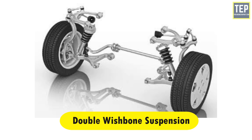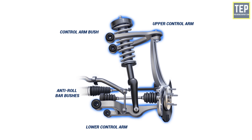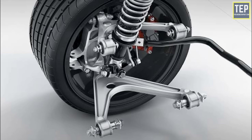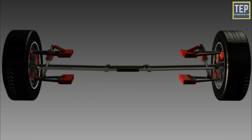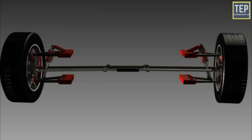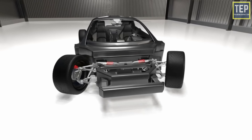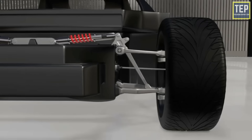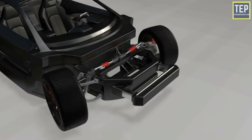In the double wishbone suspension system, the wheel is mounted on the wheel hub, which is provided with two links: an upper link and a lower link. Both links are pivoted to the frame of the vehicle. A shock absorber is placed between the frame and the lower link via a flexible joint. When the vehicle moves on uneven surfaces, shocks are transferred to the shock absorber through the lower link, which absorbs the maximum amount of shock. The upper link maintains the camber of the wheel. This system is complex, costly, and requires more space.